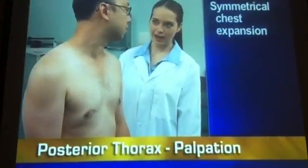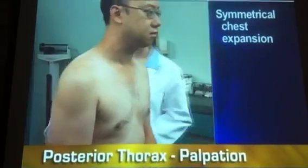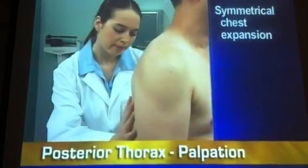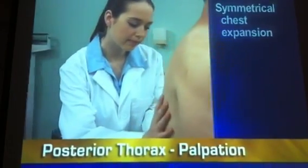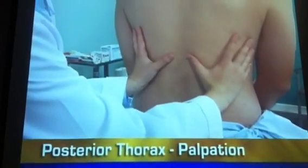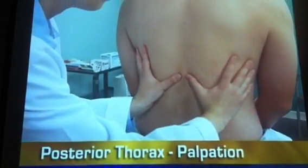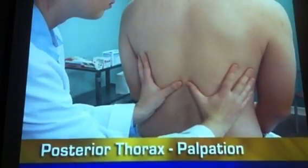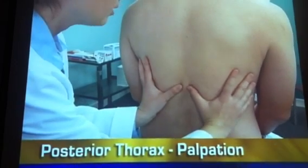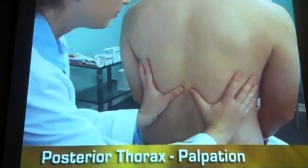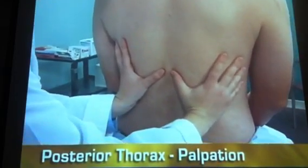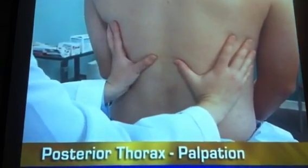Begin palpating the posterior thorax by confirming symmetrical chest expansion. Place your hands on the posterolateral chest wall, with your thumbs at T9 or T10. Slide your hands toward each other to pinch up a small fold of skin. Ask the person to take a deep breath. As he inhales, your thumbs should move apart symmetrically.